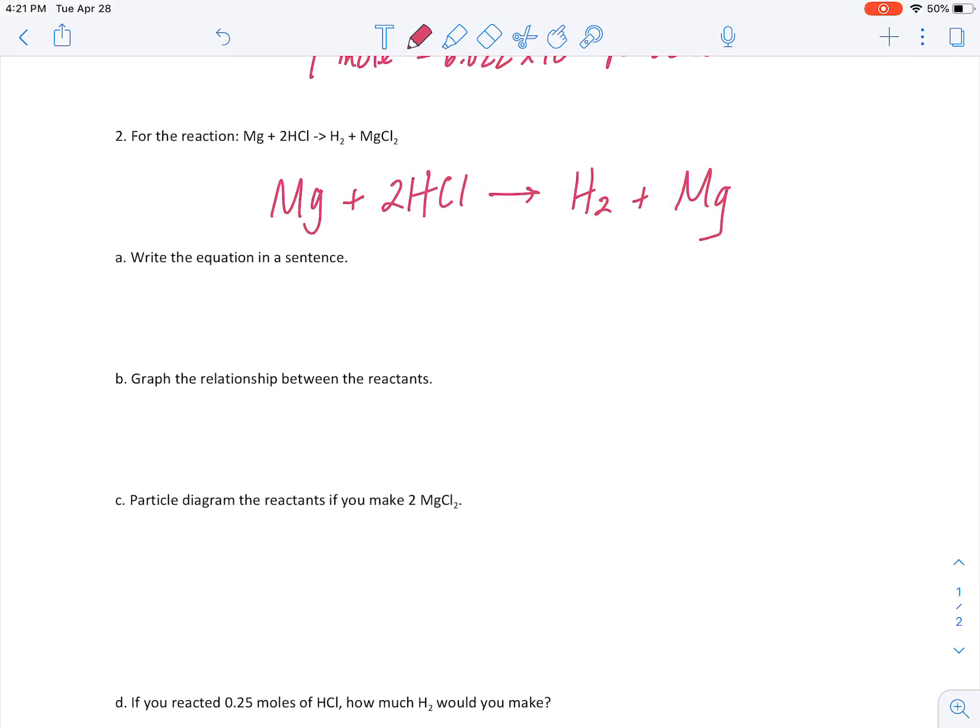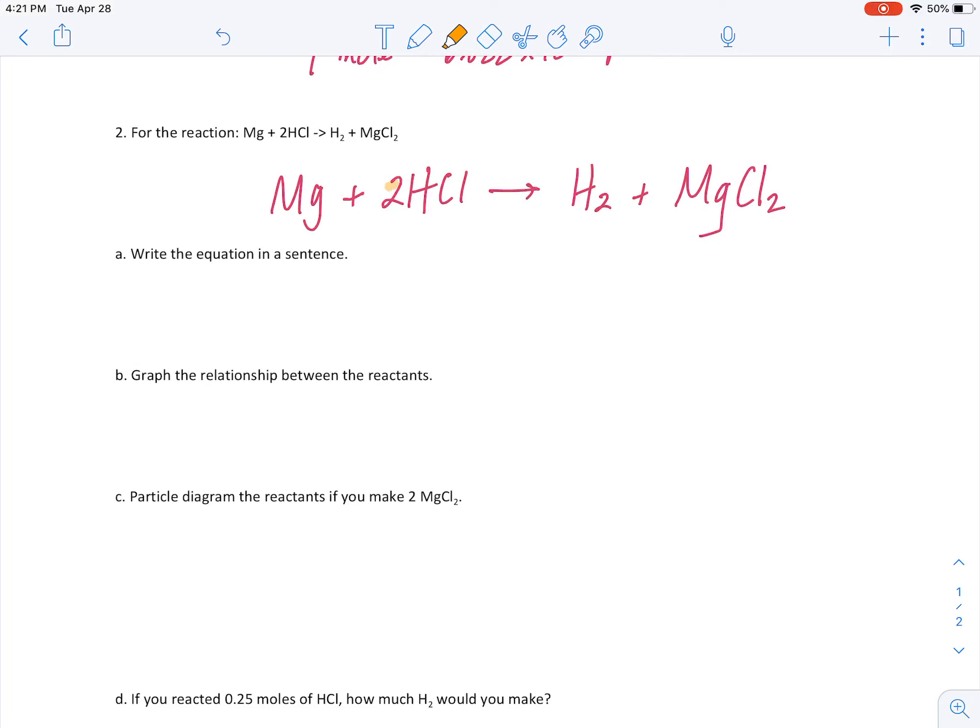And so, what is important here is that the coefficients in this chemical equation represent a ratio, a ratio of the amount of reactants needed to yield a certain amount of products. This represents a balanced chemical equation, wherein the coefficients of each of these formulas represent the number of moles or particles. I'm going to write this in a sentence.